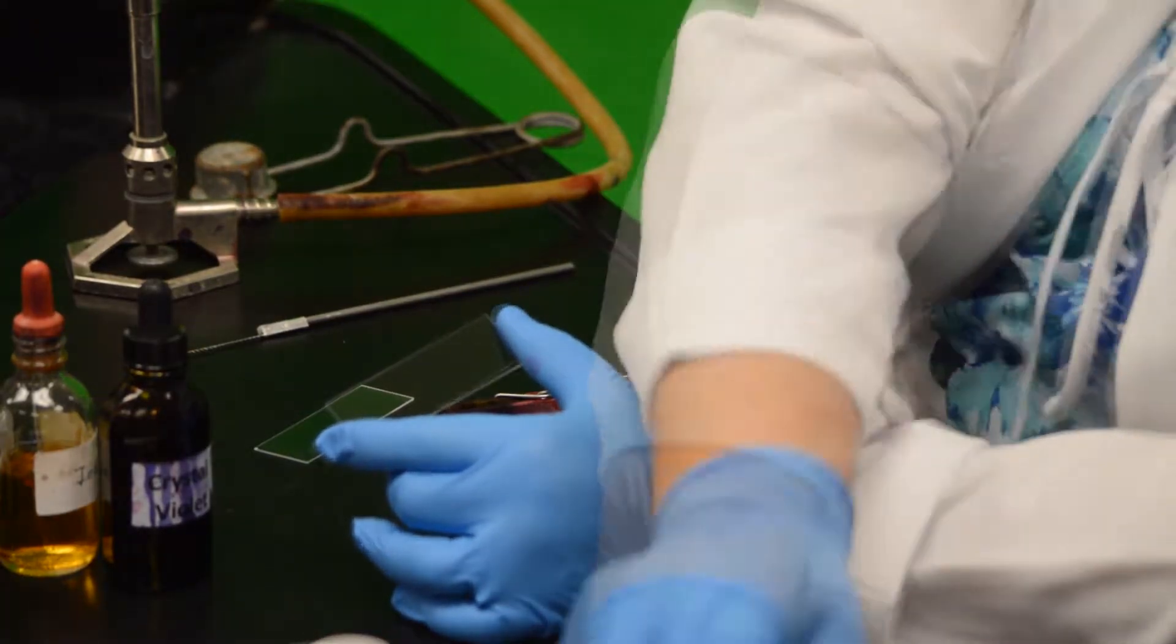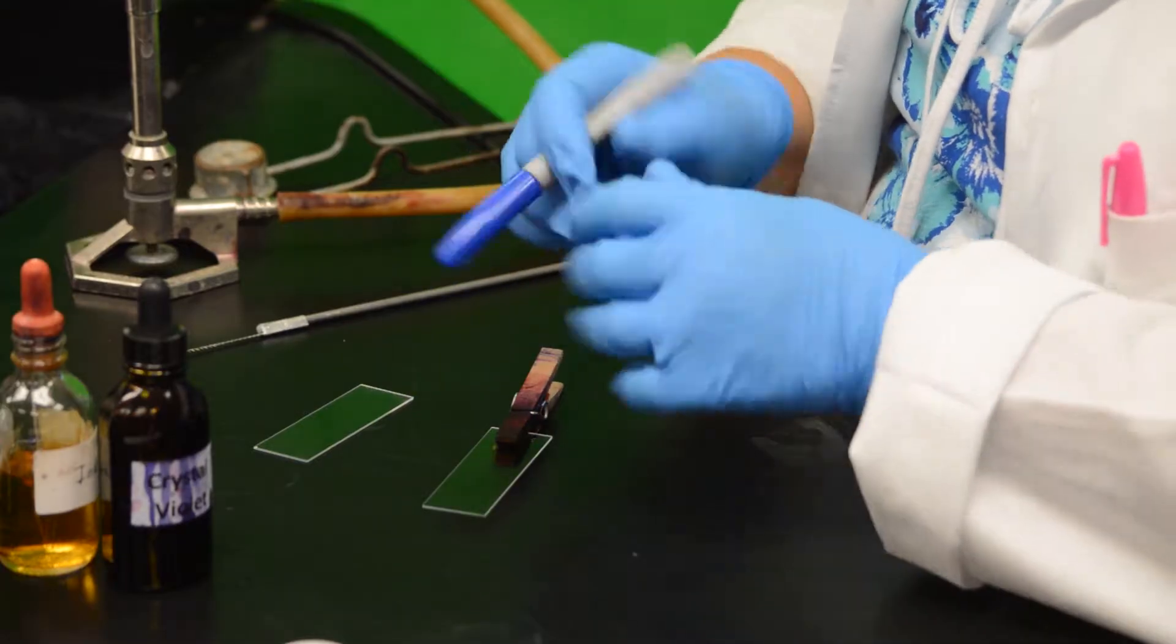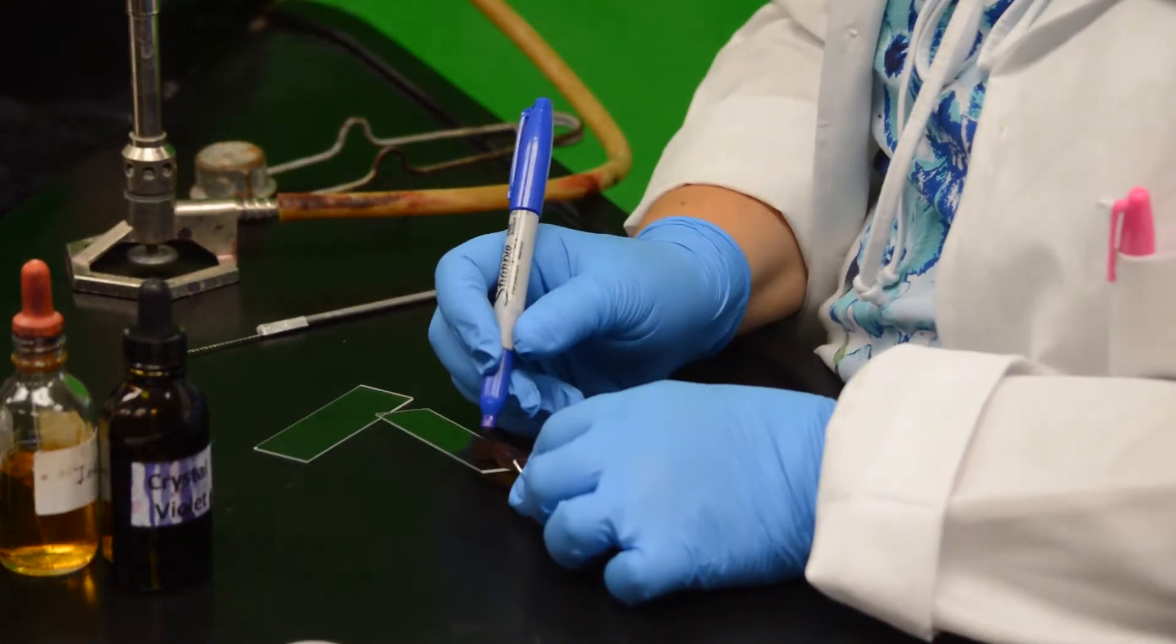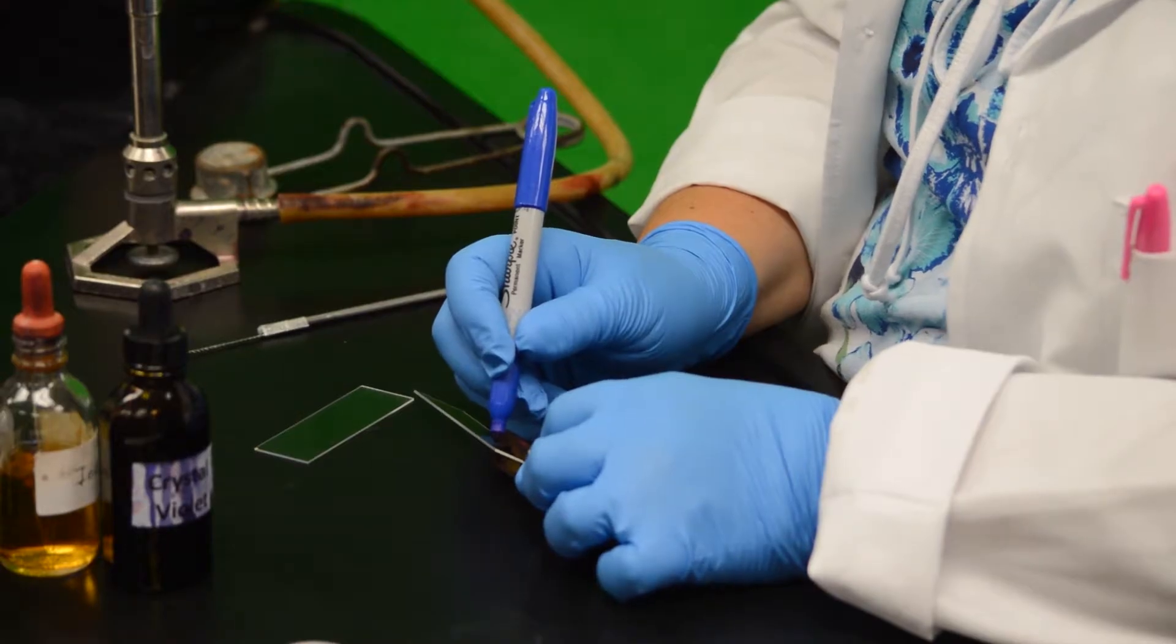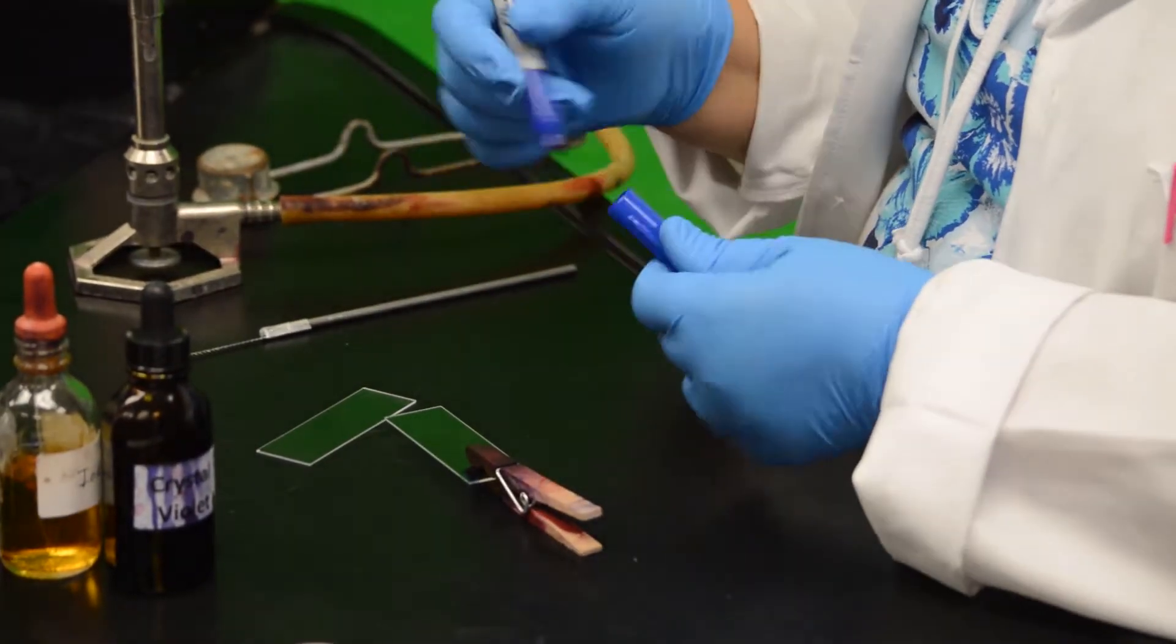Then label the slide with a Sharpie or with your initials on one of the edges, or even the initials of the specimen or sample. Next, you take a clothespin and insert the edge of the slide that has been marked into the clothespin.